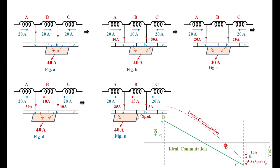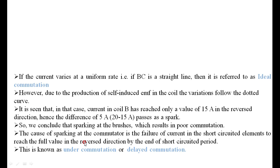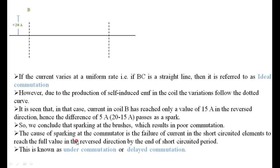If the current changes from plus 20 amperes to only minus 15 amperes, then the 5 amperes shorts in the form of a spark - this is called under commutation. The same is confirmed: plus 20 amperes to minus 20 amperes is ideal commutation.